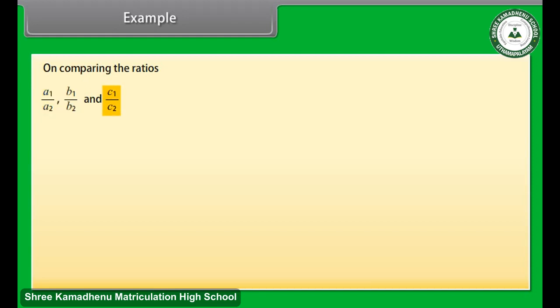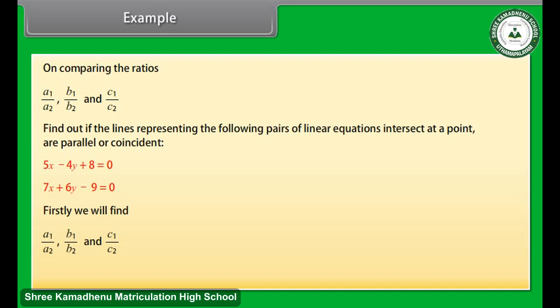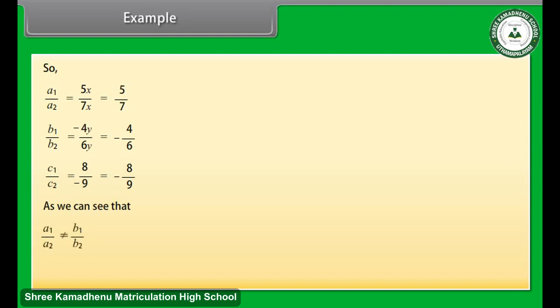Example: On comparing the ratios a1/a2, b1/b2, and c1/c2, find out if the lines representing the following pair of linear equations intersect at a point, are parallel, or coincident: 5x − 4y + 8 = 0 and 7x + 6y − 9 = 0. We find a1/a2 = 5/7, b1/b2 = −4/6, and c1/c2 = 8/−9. Since a1/a2 ≠ b1/b2, the lines will be intersecting.